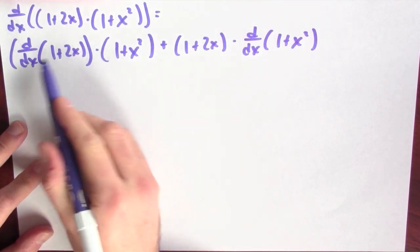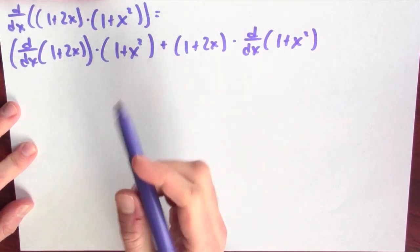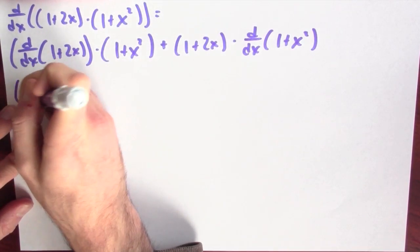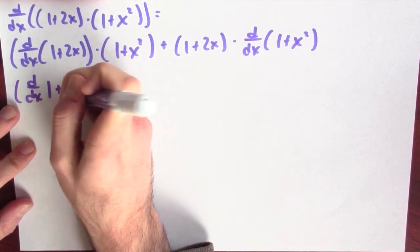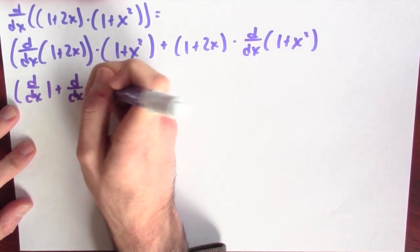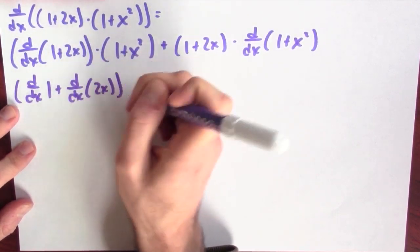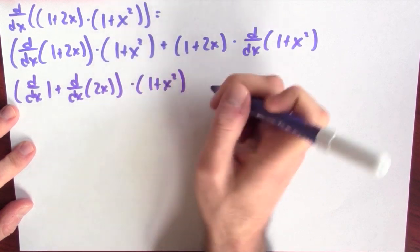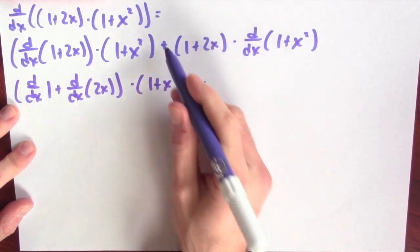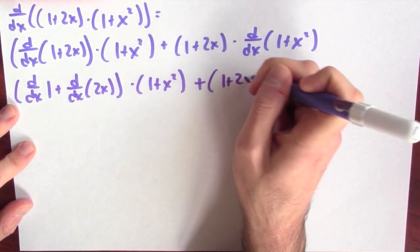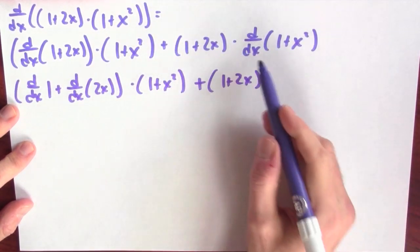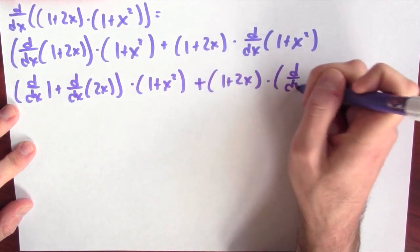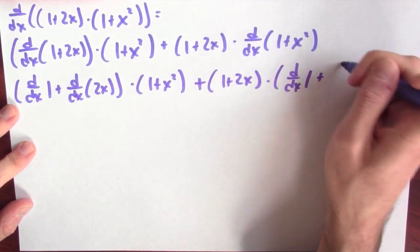That's an instance of the product rule. Now this is the derivative of a sum, which is the sum of the derivatives. So it's the derivative of 1 plus the derivative of 2x, times (1 + x²), plus (1 + 2x) times the derivative of a sum, which is the sum of the derivatives.